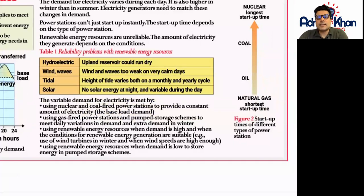The variable demand for electricity is met by other types of power generation, such as using nuclear and coal-fired power stations to provide a constant supply of electricity. We can also use gas-fired power stations and pumped storage schemes to meet daily variations in demand and extra demand, especially in the winter when renewable energy may not be on a high and demand is high at the same time.